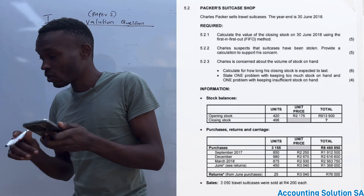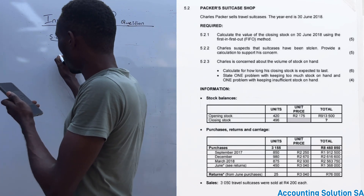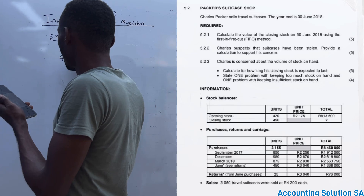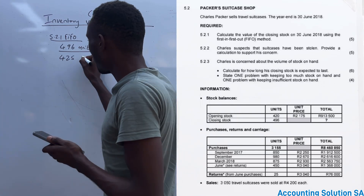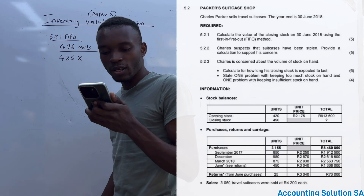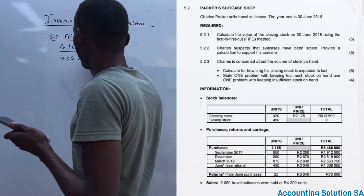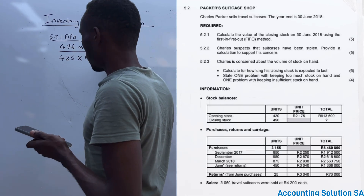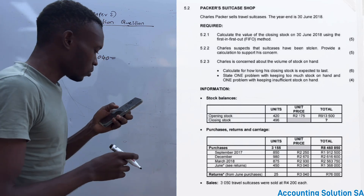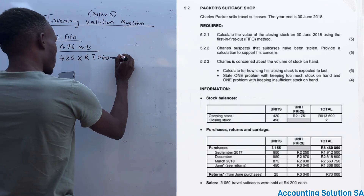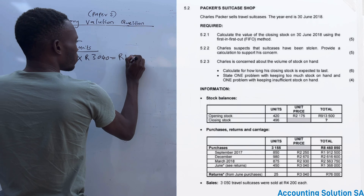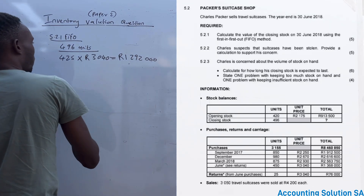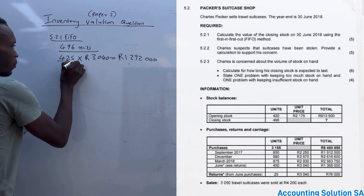So we calculate 450 minus 25, which gives us 425 units. We then multiply by the price for June, which is R3,000, giving us R1,292,000. But we are not done with 425 units, because at the end we must reach a total of 496 units.